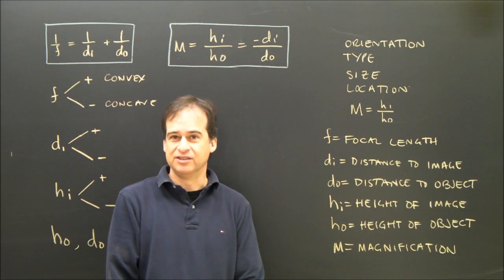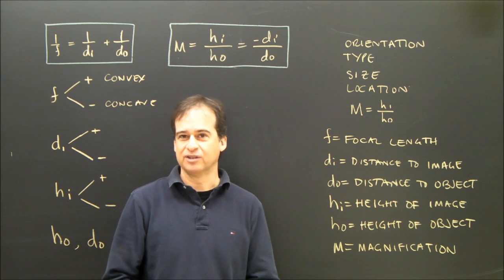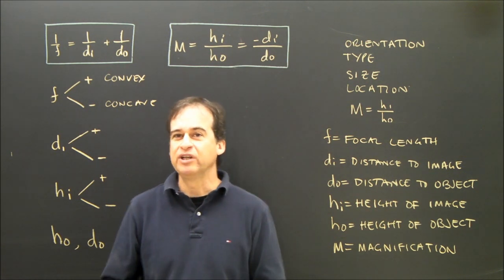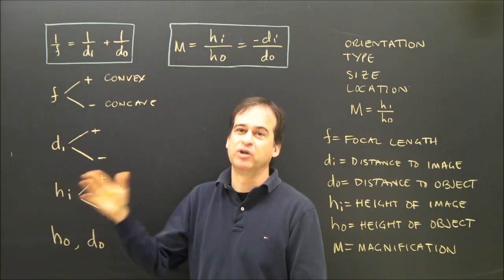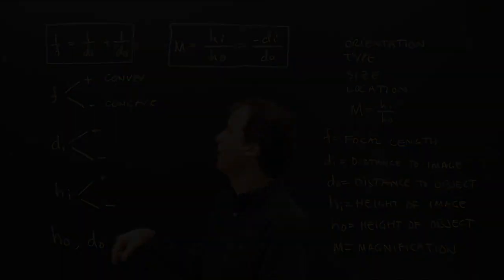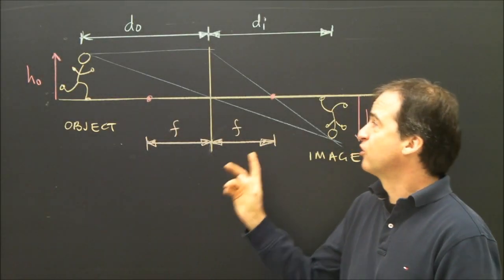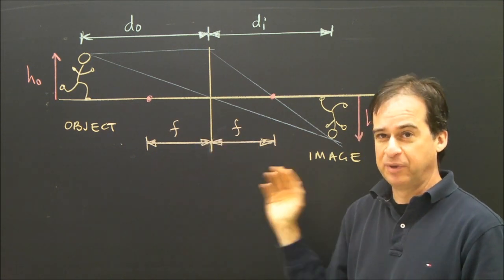We're going to do some calculations with lenses to figure out some of the image characteristics. But before we start that, we need to know what the variables are in our formulas and with our sign convention, when to use positive, when to use negative.